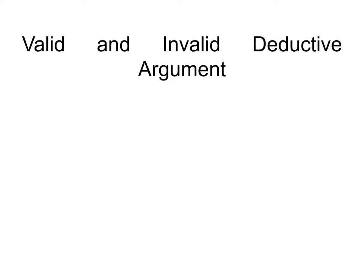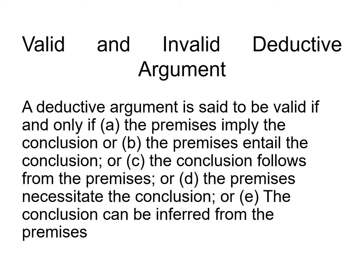Valid and invalid deductive arguments. A deductive argument is said to be valid if and only if: A) the premises imply the conclusion, or B) the premises entail the conclusion, or C) the conclusion follows from the premises, or D) the premises necessitate the conclusion, or E) the conclusion can be inferred from the premises.